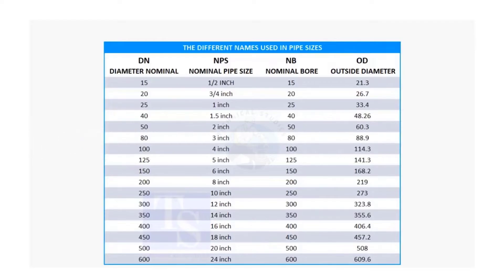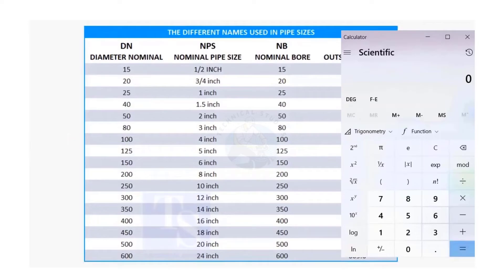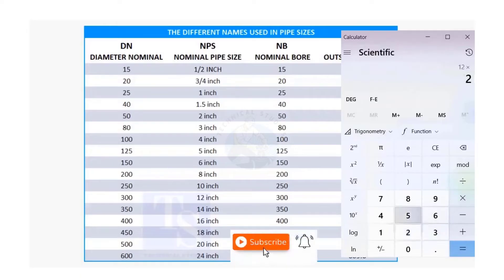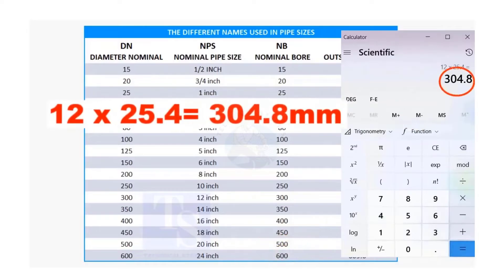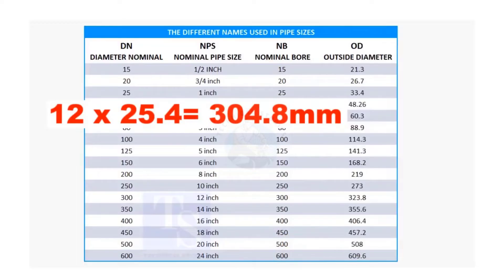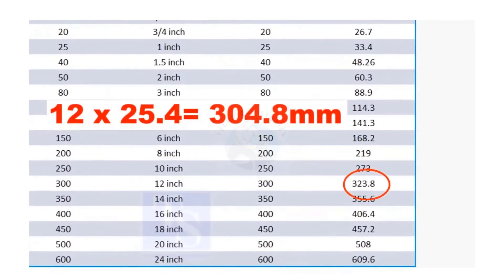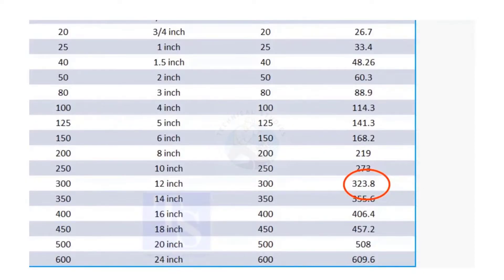Let us check this. To calculate the OD of the 12 inch pipe, multiply 12 by 25.4. The answer is 304.8 millimeters. But the actual size is 323.8 millimeters.